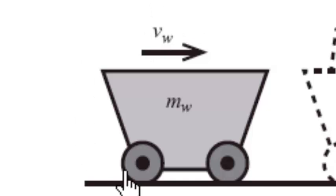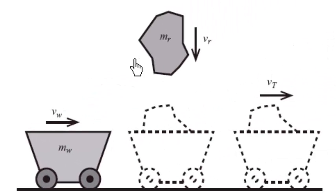Here we have a problem with a wagon, a railway wagon, moving along with speed VW and mass MW. At the same time, there's a rock falling from the sky that miraculously lands right into the wagon. As the rock hits the wagon, it lands right in.